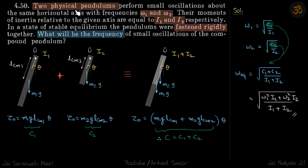We have two different physical pendulums whose angular frequencies are omega-1 and omega-2, and their moments of inertia are i1 and i2. If you combine them together, what will be the frequency of the compound pendulum?